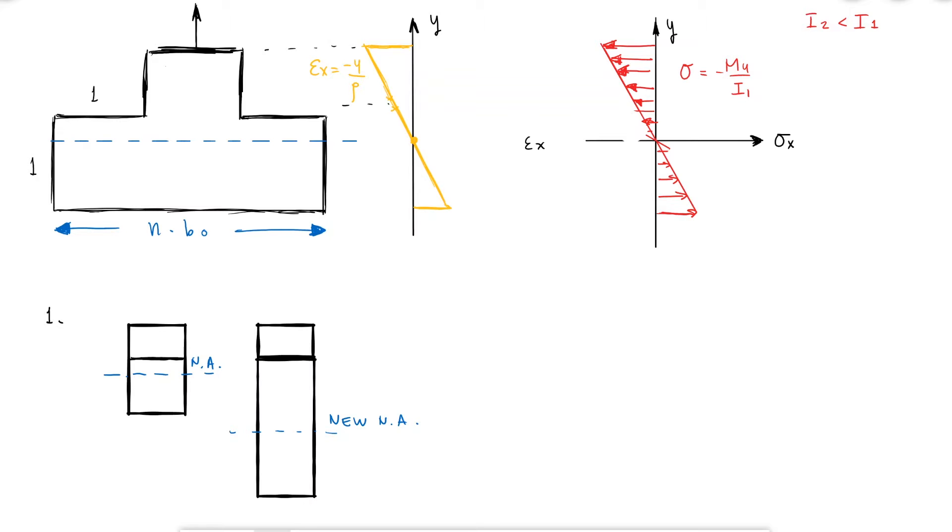More importantly, if the neutral axis is moved because of our modifications to the model, it would no longer be representative of what is happening in the real world, where the neutral axis does not move.